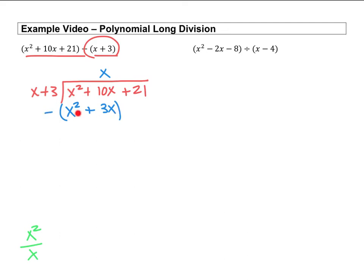And then we subtract. I like to put parentheses around here so I remember that I'm subtracting this term and I'm subtracting this term, so we just got to be careful with the subtraction. All right, x squared minus x squared, those cancel, and then 10x minus 3x is 7x.